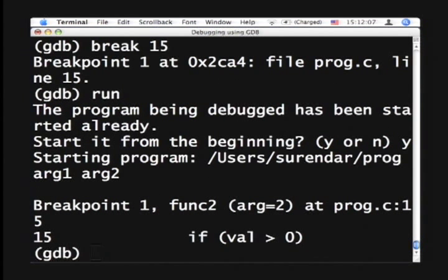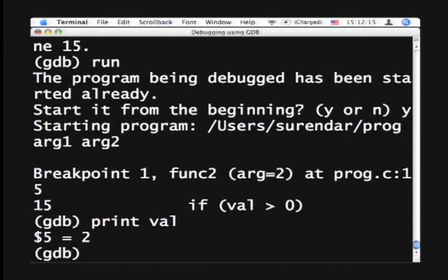And now it stops at the breakpoint at line 15. So we get to look at the values and we see that value of val is 2. And you know, so we are actually going to take that route. GDB is powerful enough for you to change the variables in order to see what would happen.